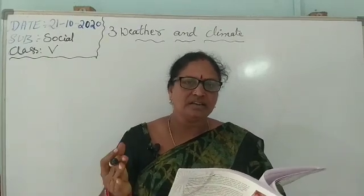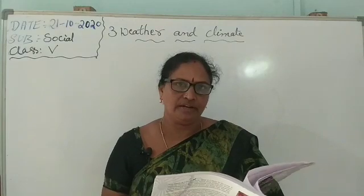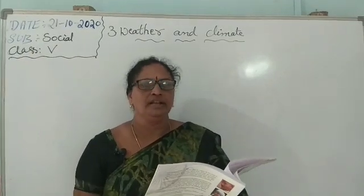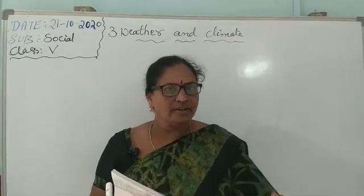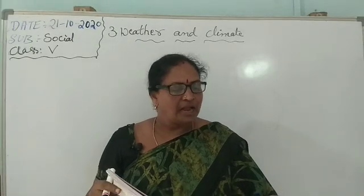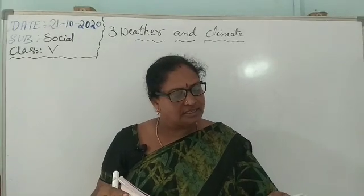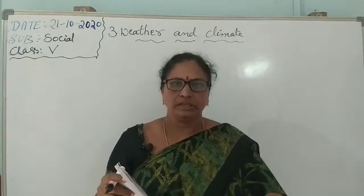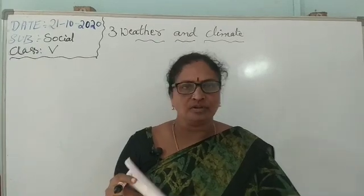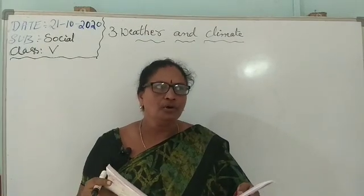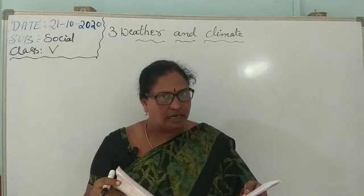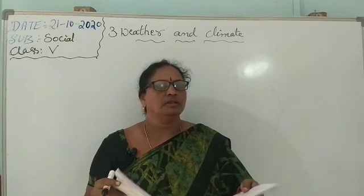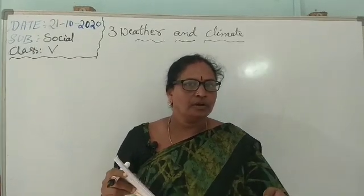Because the sun's rays fall directly and vertically on the equator, places near the equator get very intense heat from the sun. Sun is the main source of heat and light for the earth.